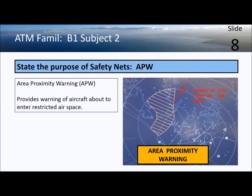APW — area proximity warning — provides a warning of aircraft about to enter restricted airspace. The restricted area could be a military exercise area where live firing is carried out or where military aircraft are flying fast and unpredictably. Here is the restricted area, and here is an unauthorized aircraft about to enter it.